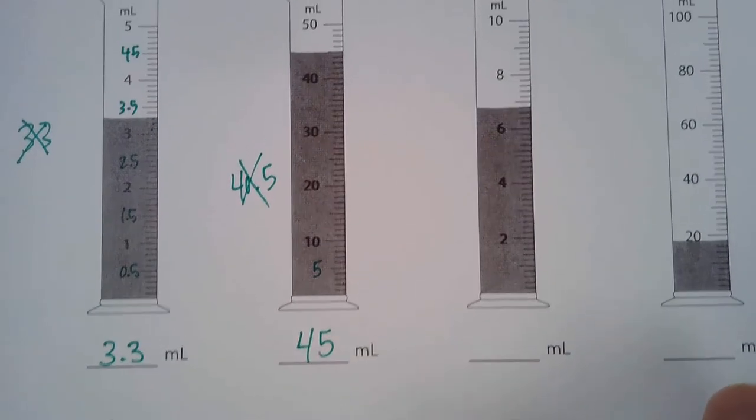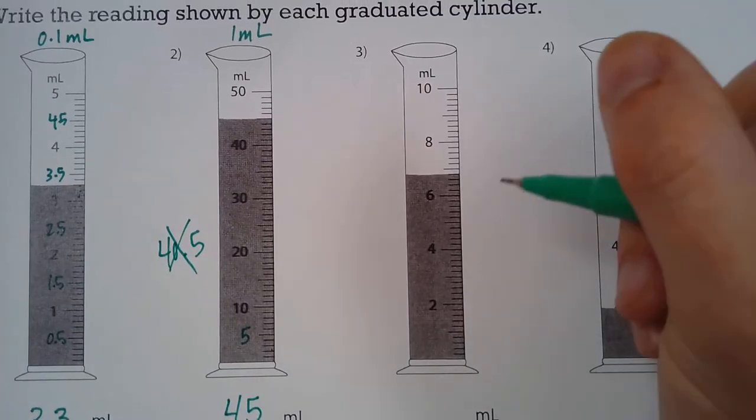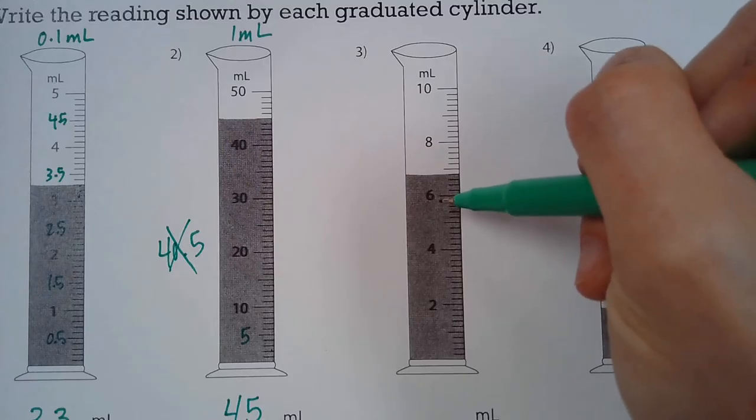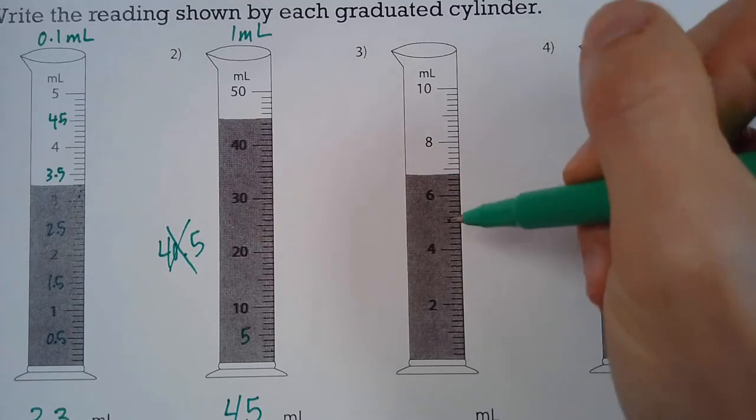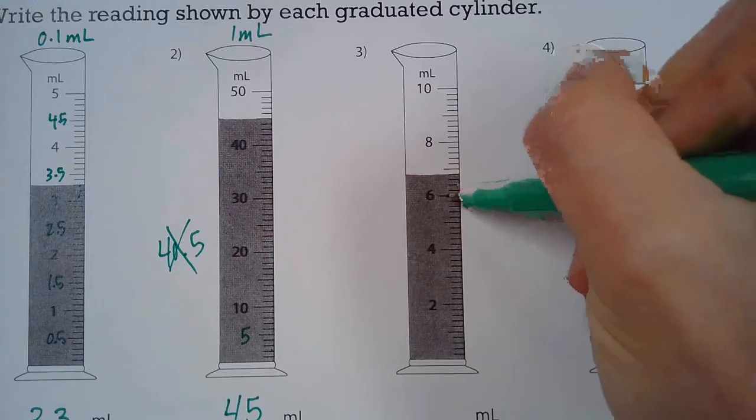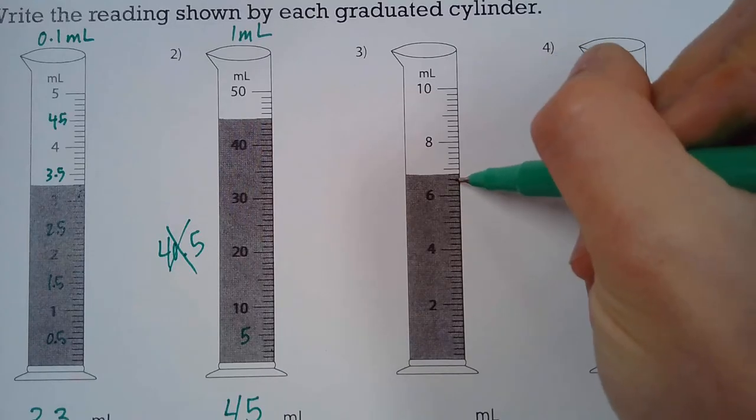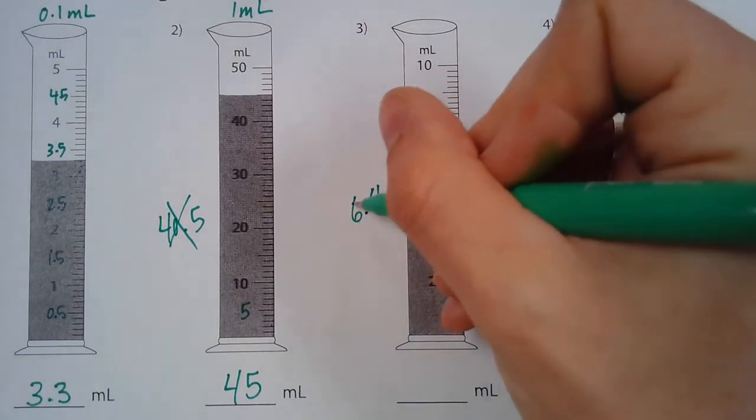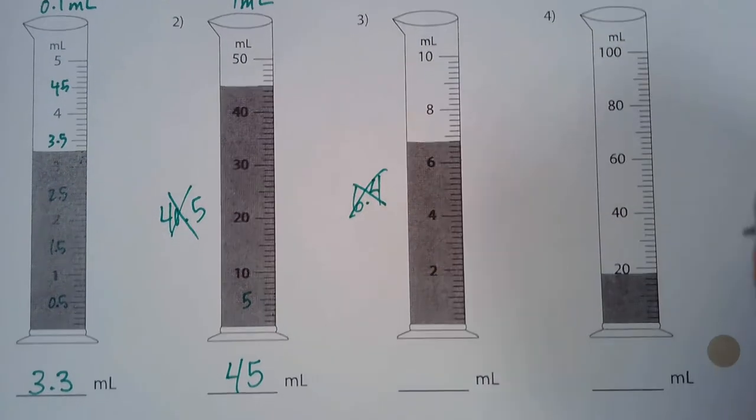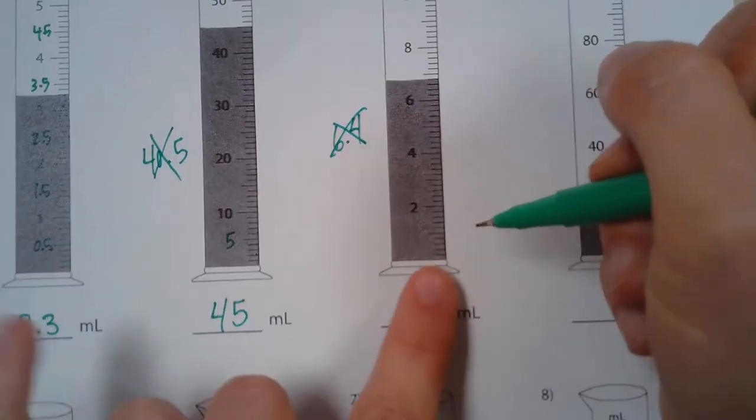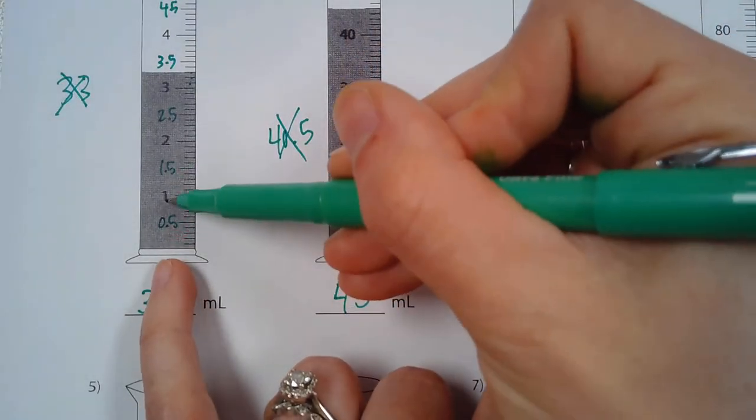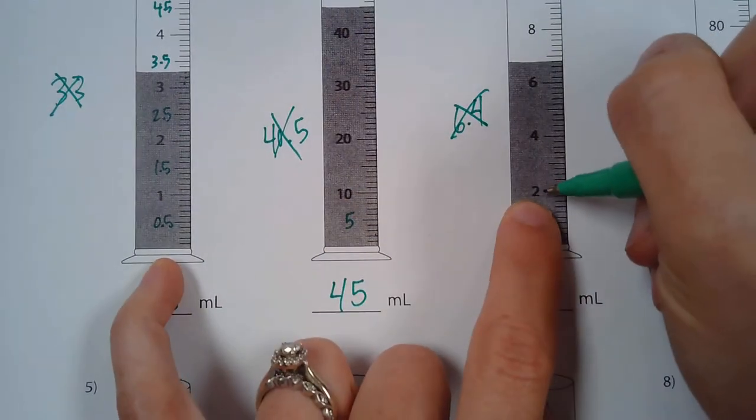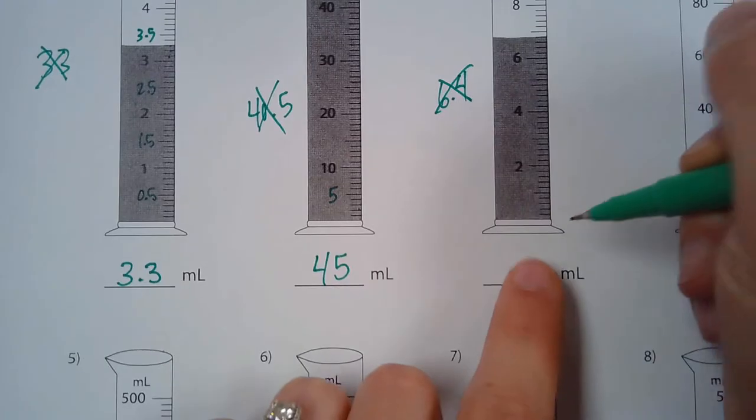Okay this next one a lot of students just look at it and they say okay well I know that it's not counting by ones but they think well maybe they're just counting by 0.1. So they say 6, 6.1, 6.2, 6.3, 6.4 and they say it's 6.4 millimeters. That would not be correct and here is why.